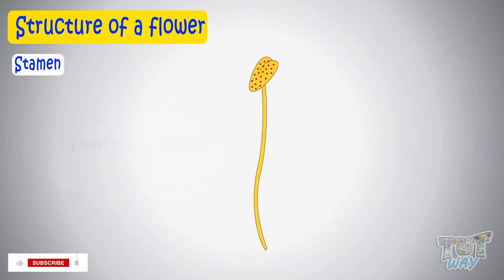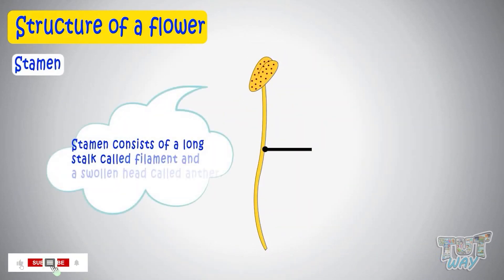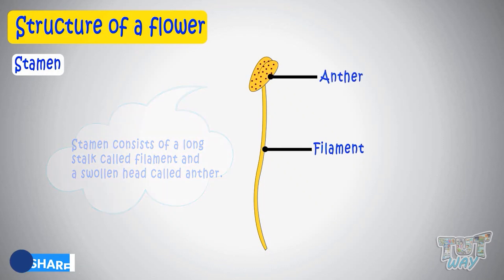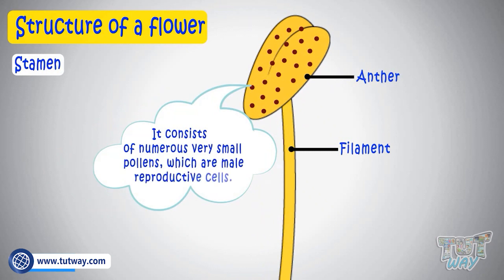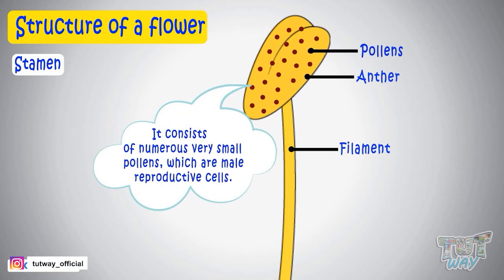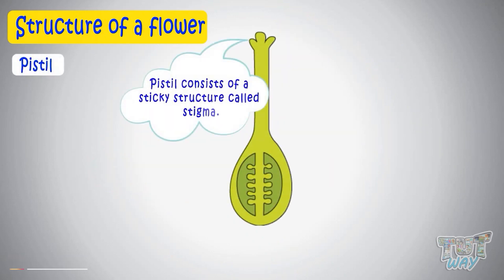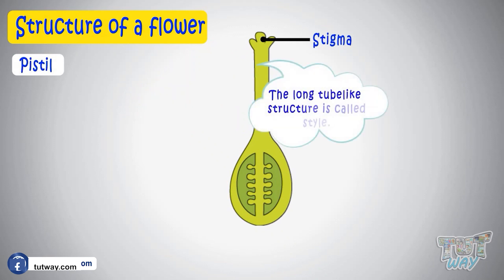The stamen consists of a long stalk called the filament and a swollen head called the anther. It consists of numerous very small pollens, which are the male reproductive cells. The pistil consists of a sticky structure called the stigma, attached to a long tube-like structure called the style.